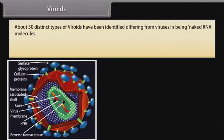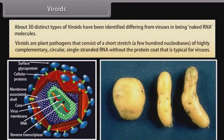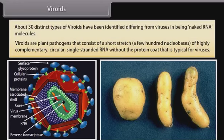About 30 distinct types of viroids have been identified, differing from viruses in being naked RNA molecules. Viroids are plant pathogens that consist of a short stretch of a few hundred nucleobases of highly complementary, circular, single-stranded RNA, without the protein coat that is typical for viruses.